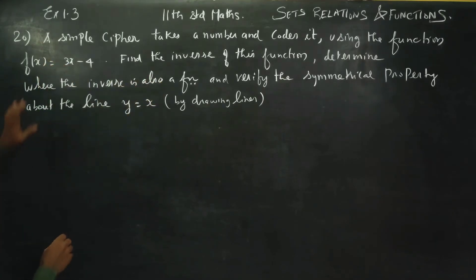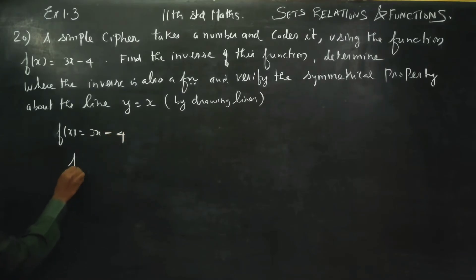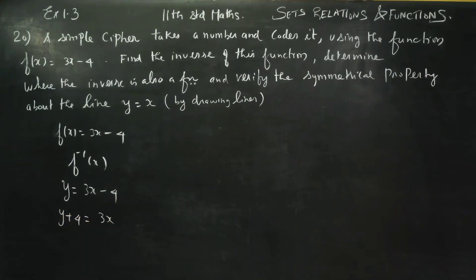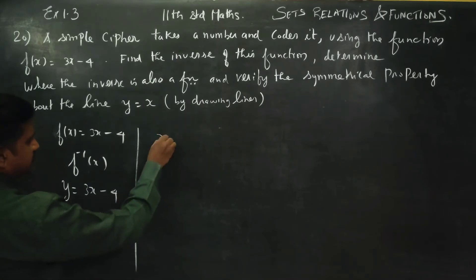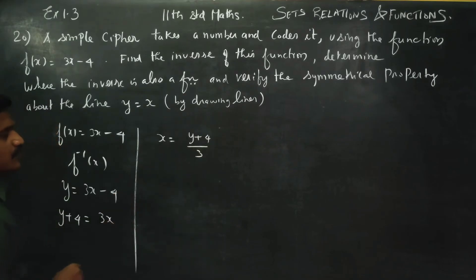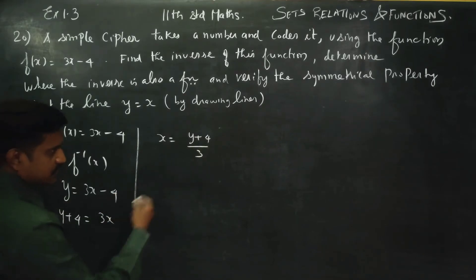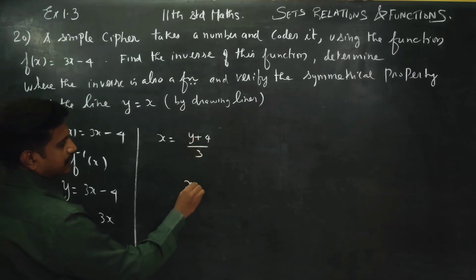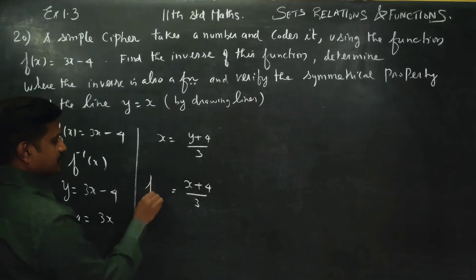Find the inverse of this function. F of x is equal to 3x minus 4. Name this as y. So y is equal to 3x minus 4. Then y plus 4 is equal to 3x, so x is equal to y plus 4 by 3. Change this to inverse and replace y by x — x plus 4 by 3.